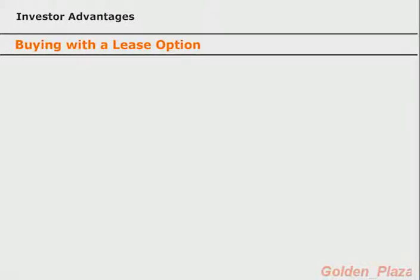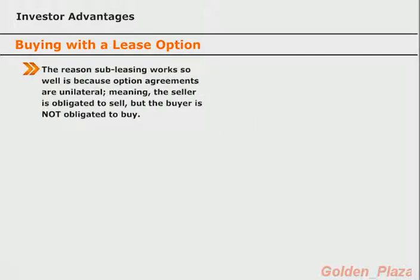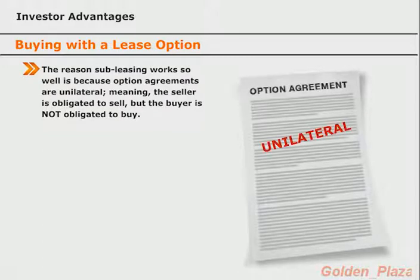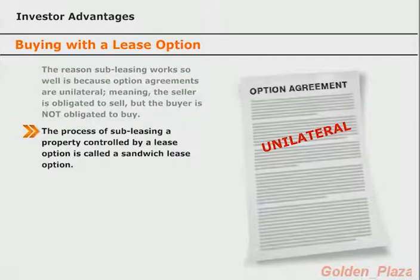The reason it works so well lies in the general format of the option agreement. Option agreements are unilateral — the seller is obligated to sell you the property if or when you exercise your option to buy, but you are not obligated to buy. By including the correct clauses in your lease and option agreements, you can lease and sell the property to someone else. This process of controlling the property using a lease option and then lease optioning it to a third party is called a sandwich lease option, which we'll cover in much more detail in the sandwich lease option lesson.